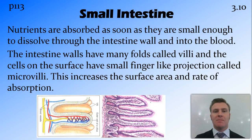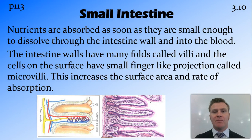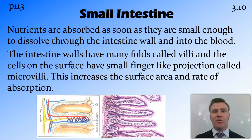The main job of the small intestine is to absorb nutrients across the intestine wall. As soon as food has been chemically digested far enough that it's able to dissolve, it crosses the wall and into the bloodstream. Surface area is important here — the small intestine has a whole heap of folds called villi, and projections from the surface of the small intestine wall called microvilli. These increase the surface area and therefore increase the rate of absorption of food into the blood system.